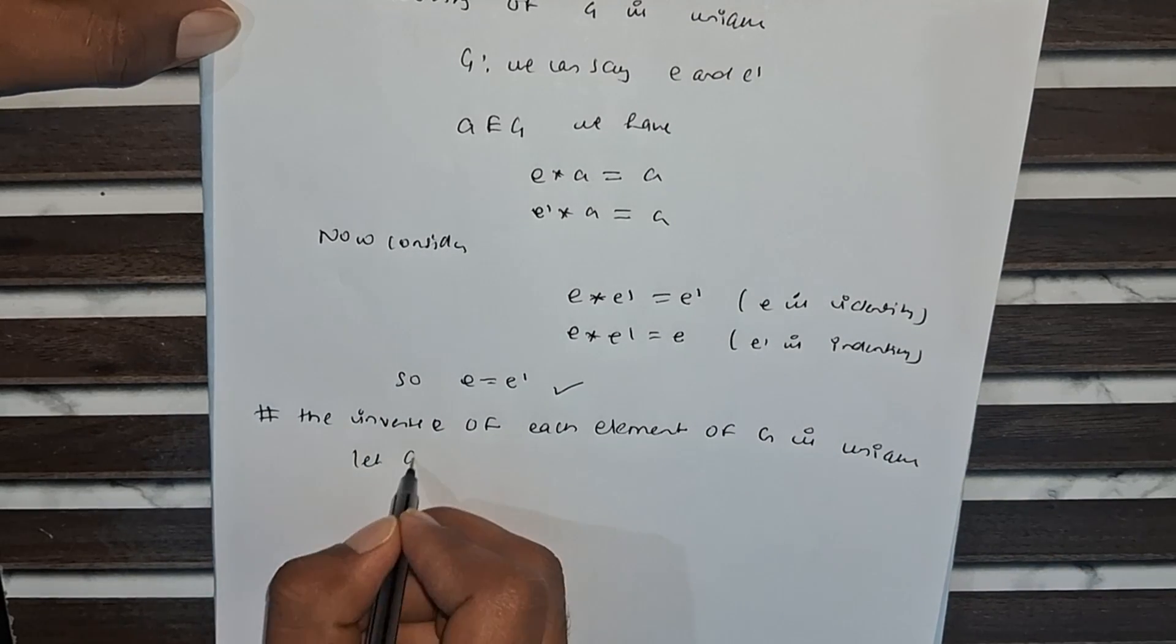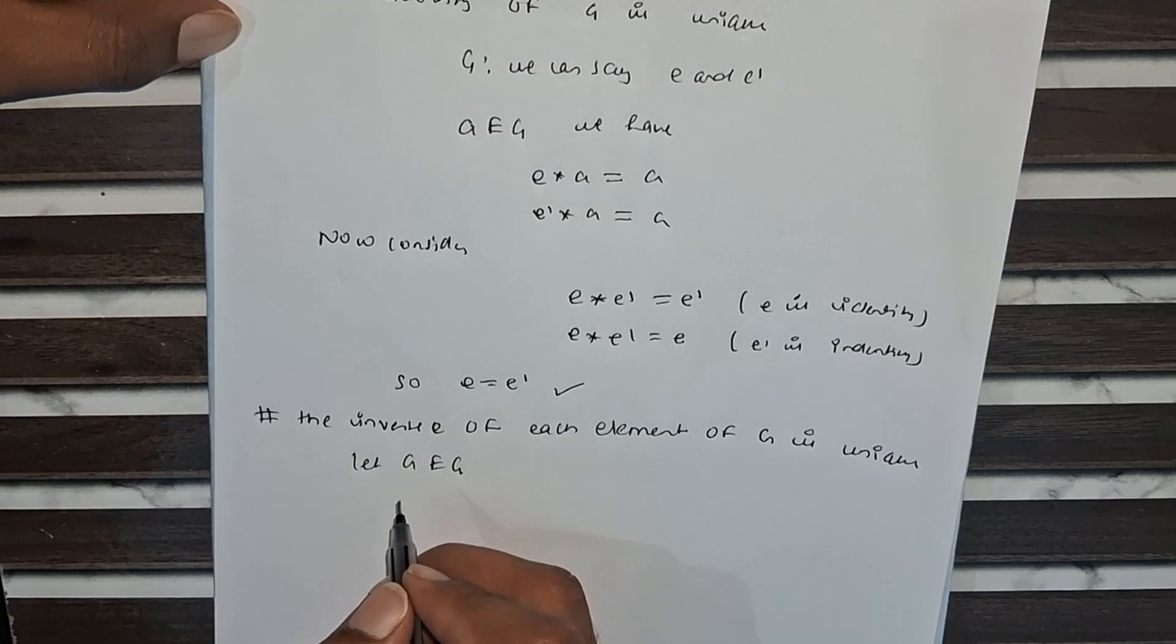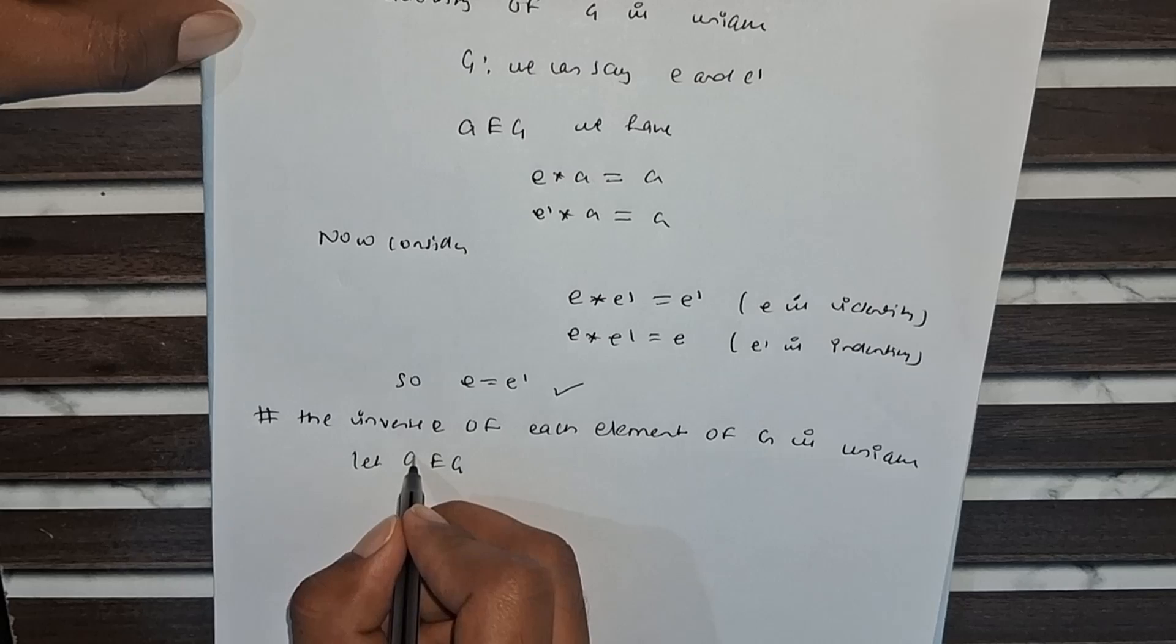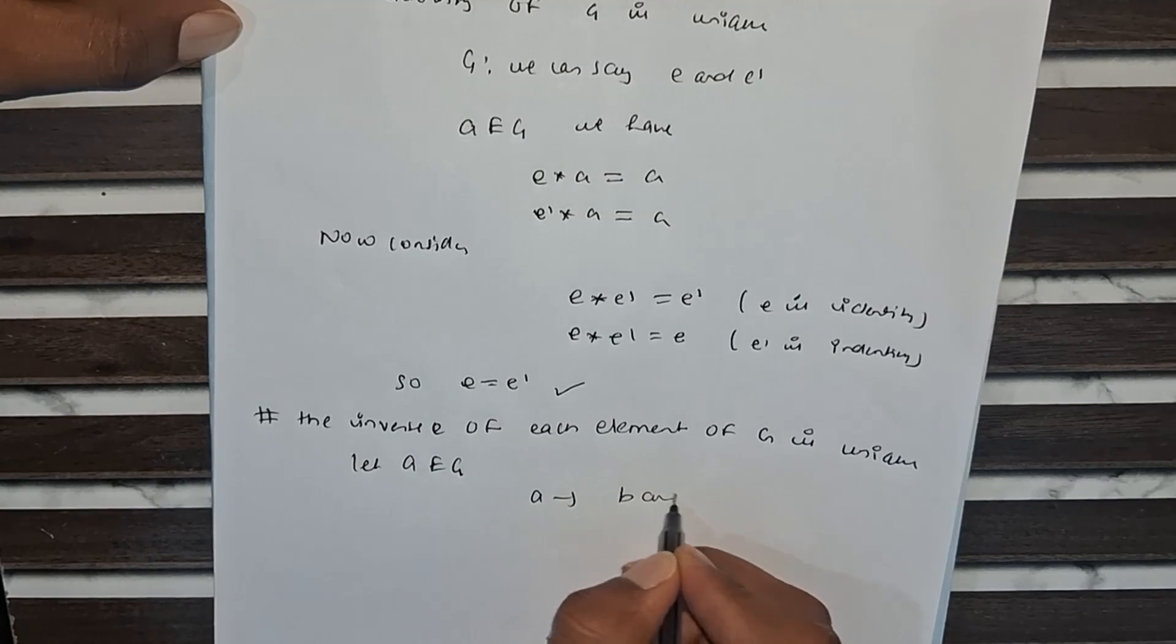Let A belong to G. Suppose A has two inverses, B and C.